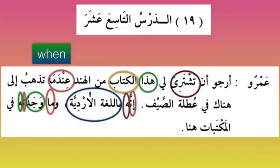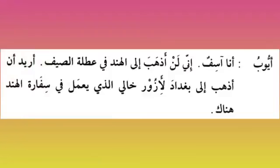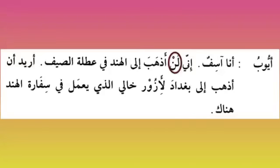Fill maktabati huna — in the bookstores here. 'Maktabatun' is your library or bookstore; 'maktabat' is the plural. So I did not find it in the bookstores over here. Ayyub says 'ana asifun' — 'asifun' means 'sorry' — I am sorry. 'Inni' — truly I — 'inna' harfu nasbun wa taqidin, it has ism and khabar, ya mutakallim is ismu inna mansoobun. Then 'lan adh-haba' — I will not go — fi'l mudari mansoobun because of 'lan' — truly I am not going to India in the summer holidays.